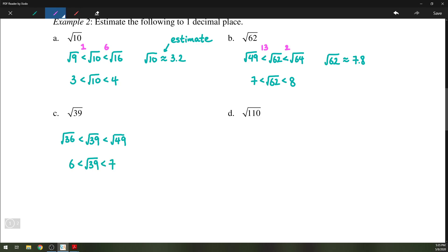Then we look at how far it is from each number. It's 3 away from 36 and 10 away from 49, so it's probably closer to 6. We can say that the square root of 39 is approximately 6.2, maybe 6.3.